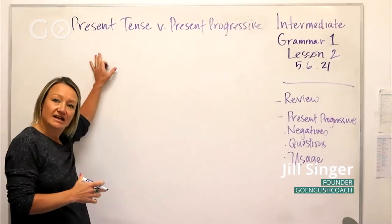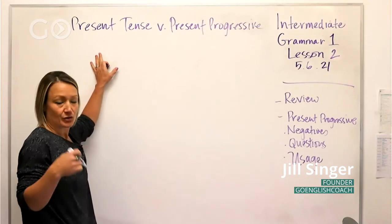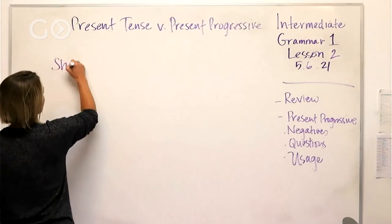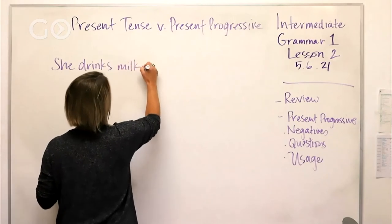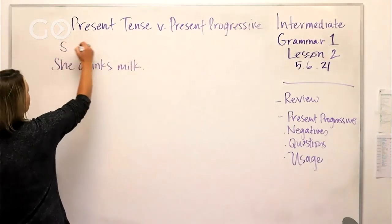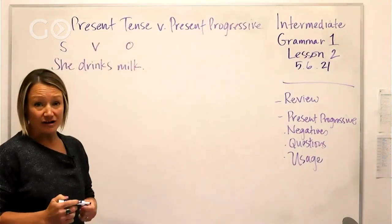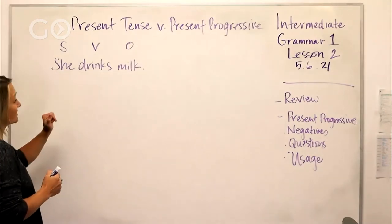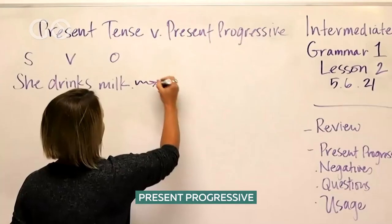We use this tense to talk about things we do regularly or often. For example: 'She drinks milk.' It's a very simple tense. You've got your subject, verb, object — that's the order of all English sentences. That's the simple present tense. Now let's change this to the present progressive.